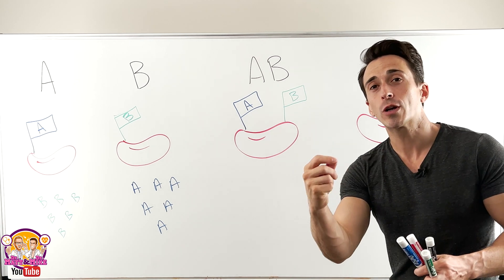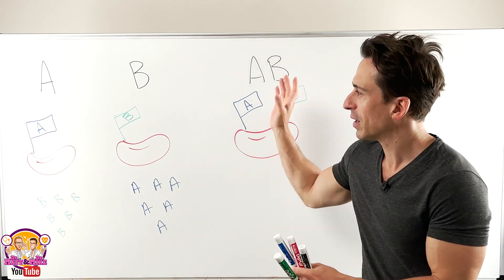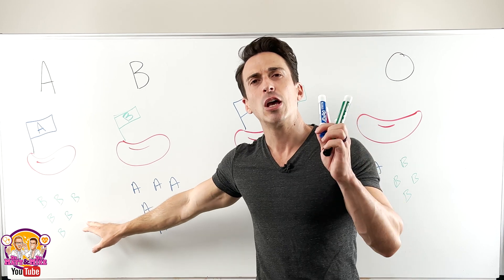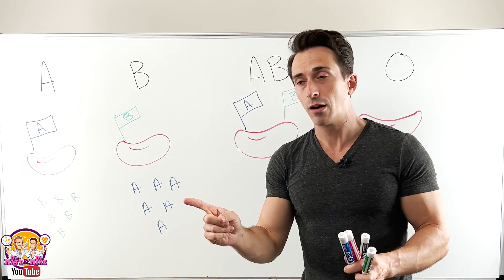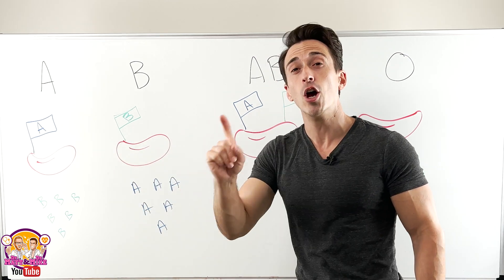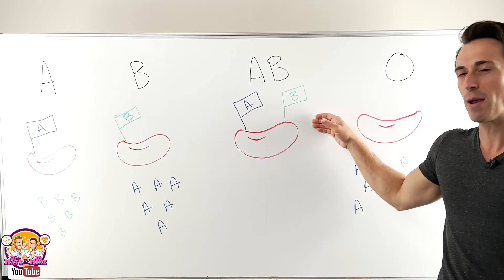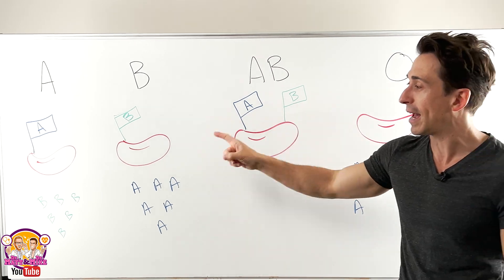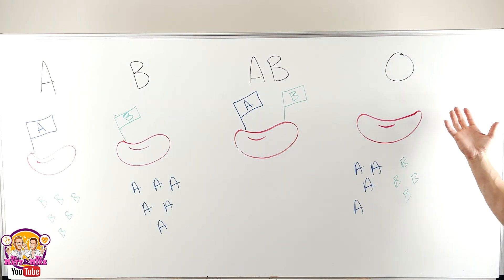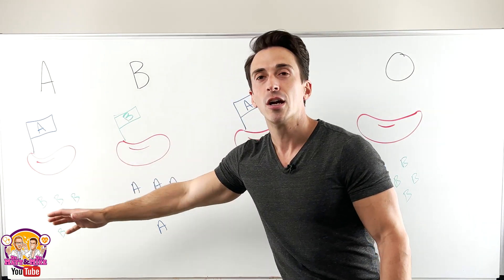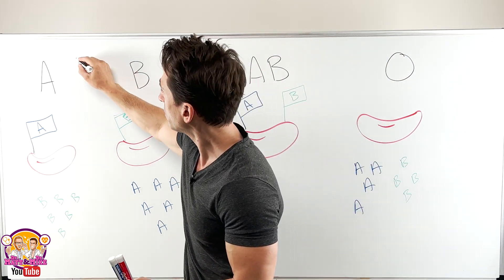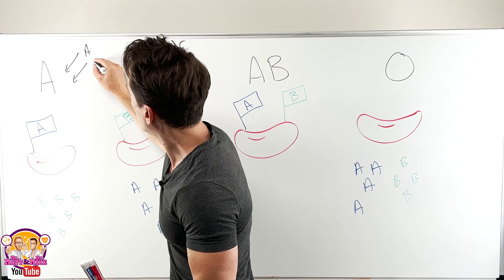This allows us to know who can donate blood to whom. If you are blood type A, you are waving the A flag but you have anti-B antibodies. So you can only receive blood from those that don't have the B flag. You can't receive B blood and you can't receive AB blood, because even though it carries the A flag, it also carries the B flag, which your antibodies will attack. However, O has no flags, so O can be donated to A. Blood type A can only receive A blood or O blood.